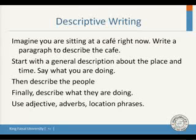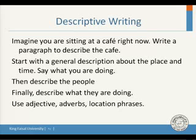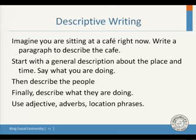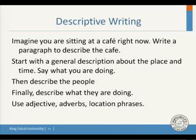Now try to write something like this. Imagine you are sitting at a cafe right now and write a paragraph to describe it. Start with a general description about the place and time, and say what you are doing. After that, describe the people in that place. Finally, describe what they are doing — what is happening around you. Try to use adjectives, adverbs, and location phrases, just like the examples we have discussed.